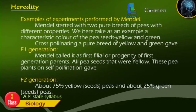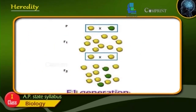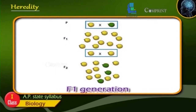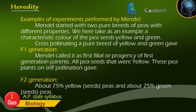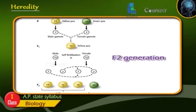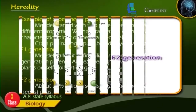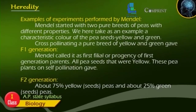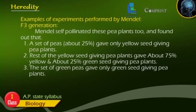Examples of experiments performed by Mendel. Mendel started with two pure breeds of peas with different properties. Taking as an example the characteristic color of pea seeds — yellow and green — cross-pollinating a pure breed of yellow and green gave the F1 generation. Mendel called it the first filial or progeny of the first generation parents. All pea seeds that resulted were yellow. These pea plants on self-pollination gave the F2 generation — about 75% yellow peas and about 25% green peas.